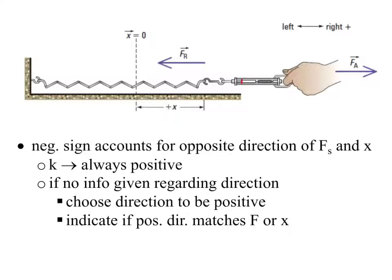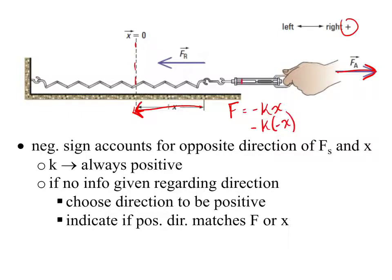So, looking at this situation, if I'm going to say right is positive, then I'm pulling this to the right, so my force should be positive. But my displacement is wanting to go back to its equilibrium — so here my force will be positive and my displacement would be negative. So, if I look at F = -kx, if I know my force should be positive, then I need to put a negative in for x in order to get that positive. Negative times a negative is a positive, and we get that positive force. It's just so the directions work out correctly for your force and your displacement.